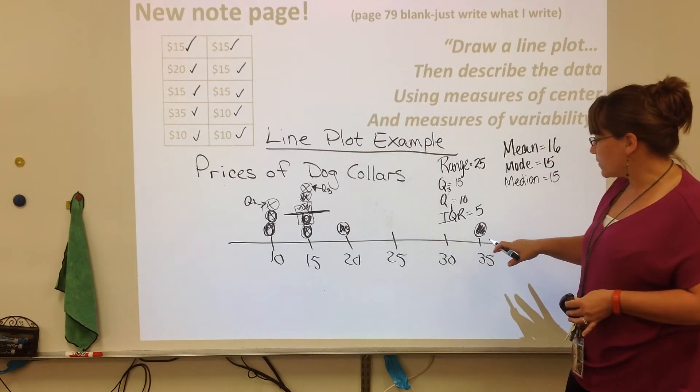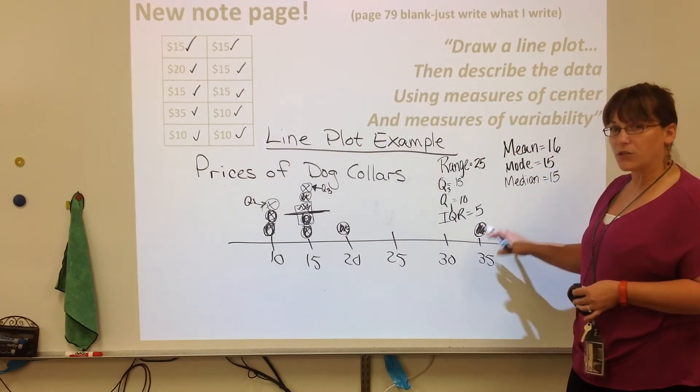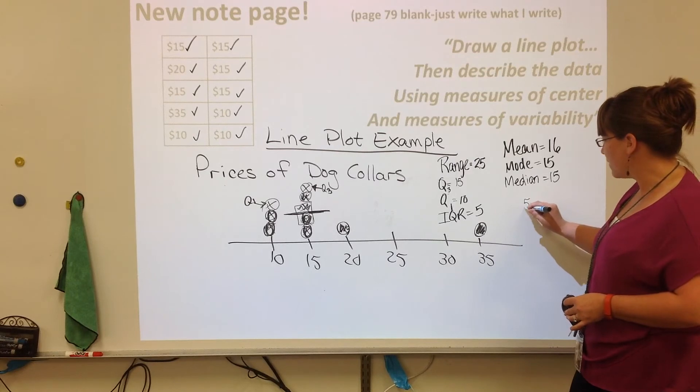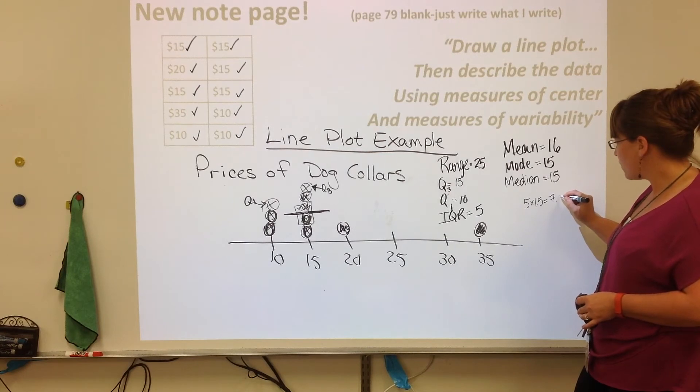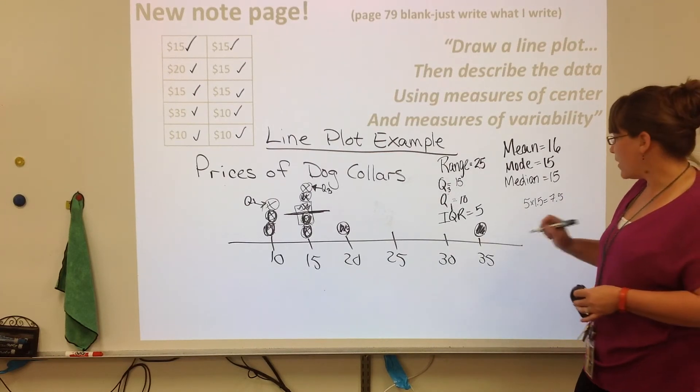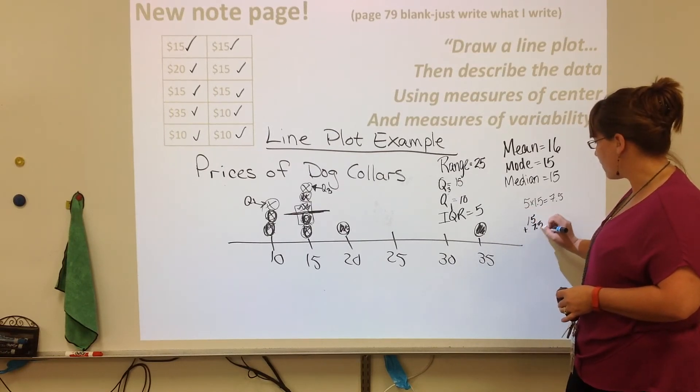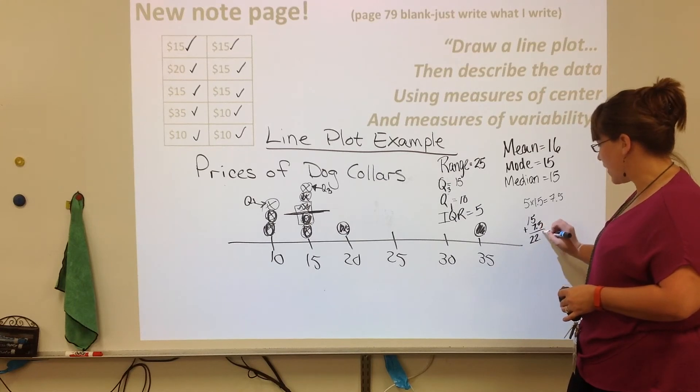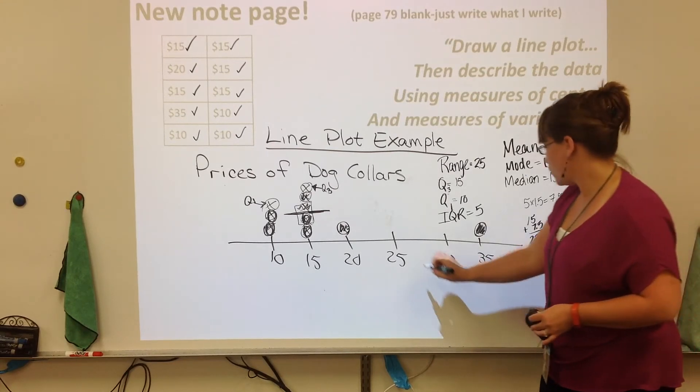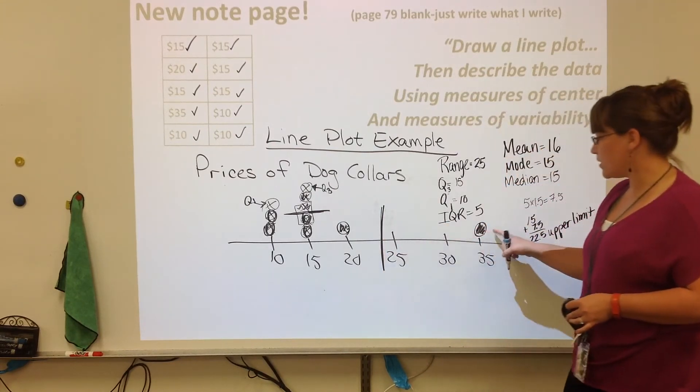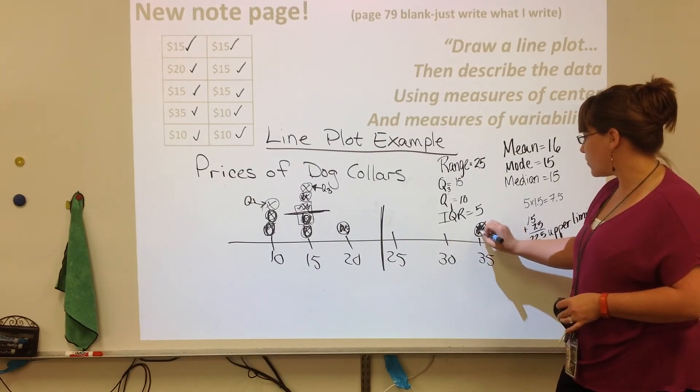Looking at this is very clear that there's a big gap and we think that this is an outlier. To make sure, we have to take our 5 and multiply it by 1 1/2, which is 7.5. Then, we're going to add it to that Q3. So, 15 plus 7 1/2 is 22 1/2. So, our upper limit, our boundary, is 22 1/2, right here. Definitely making that 35 an outlier. So, 35, this data point, is an outlier.